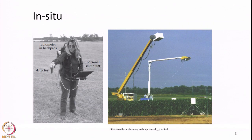Each platform has its own application in remote sensing. The first category we are going to discuss is the ground based platform or in-situ observations. Ground based platforms generally means whatever sensor we carry, we keep it close to the ground. For example, in this particular slide we have a person collecting data above the field using a handheld instrument.